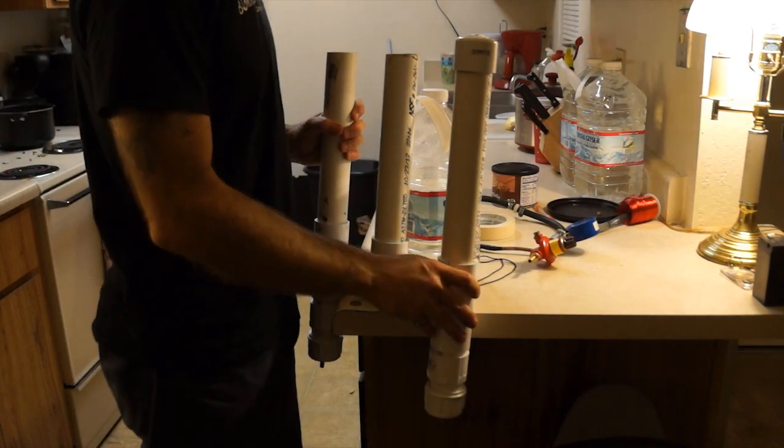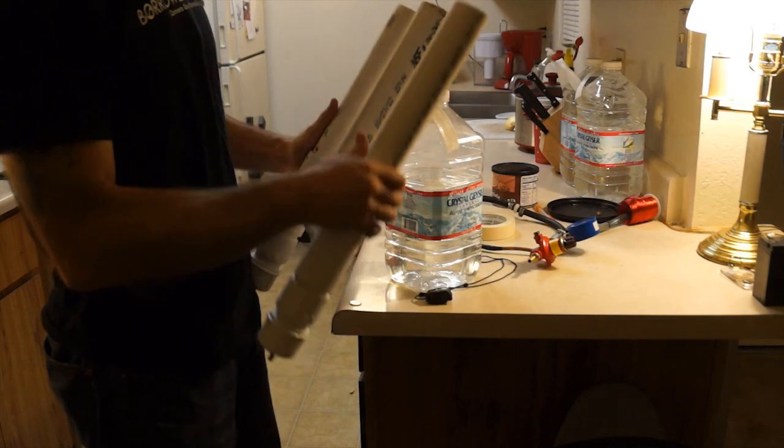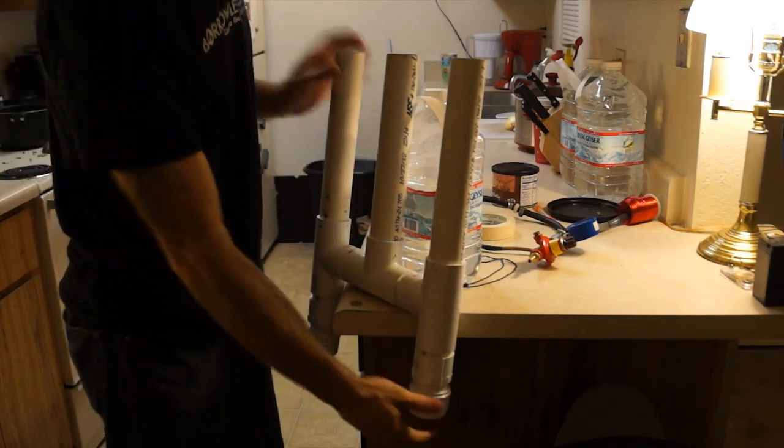All right, so this is my scaled-up Hoffman apparatus. As you can tell, there's three tubes here, some inch-and-a-half PVC.